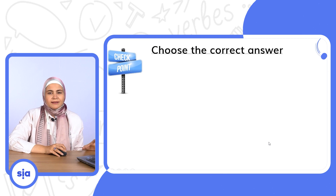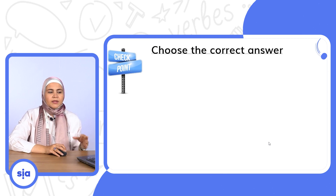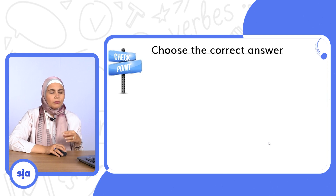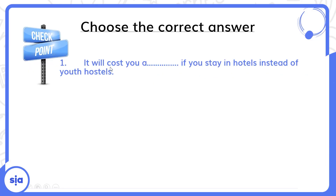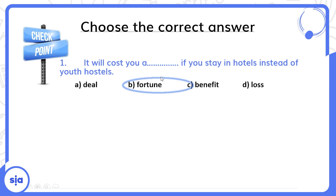Now let's choose the correct answer. هتوقف الفيديو، تقرأ السؤال وتحله، بعد كده تفتح الفيديو تاني وتشوف الإجابة. Number one: It will cost you a blank if you stay in hotels instead of youth hostels — it will cost you a fortune. Number two: When the electricity was cut off, we used a candle.